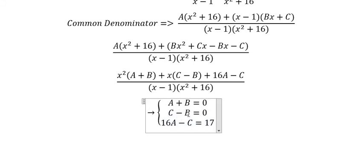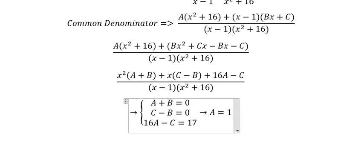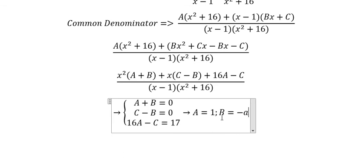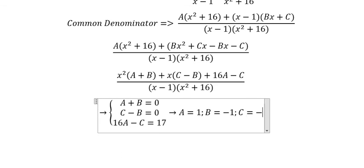And now we find the value of A, B, C. So A is about number 1. B is about negative number 1. C equals to negative number 1.